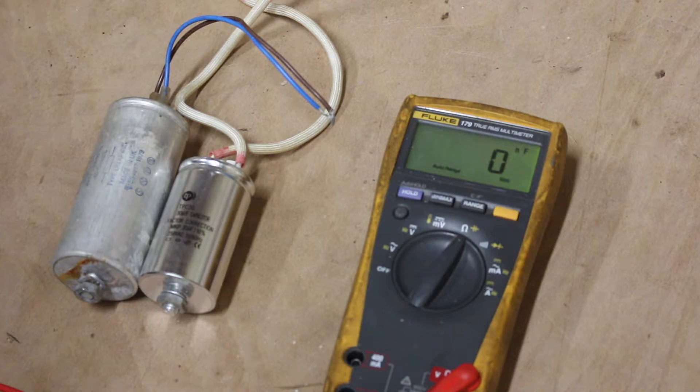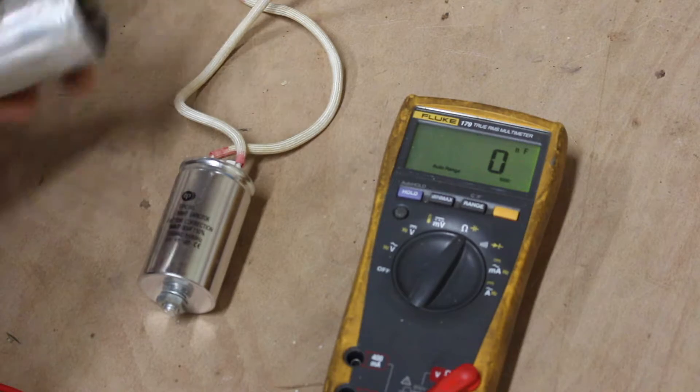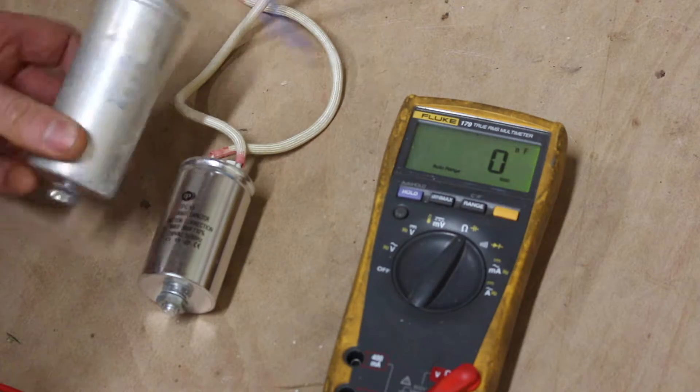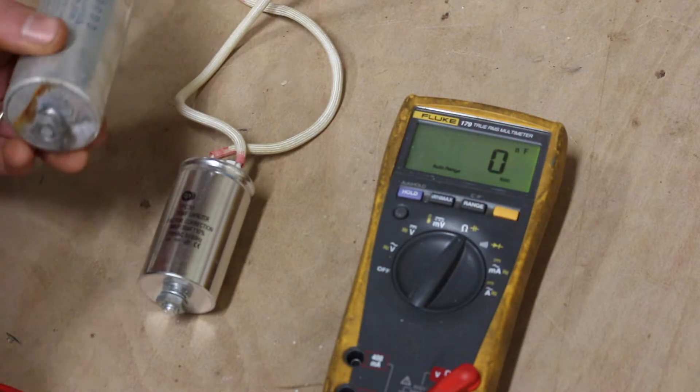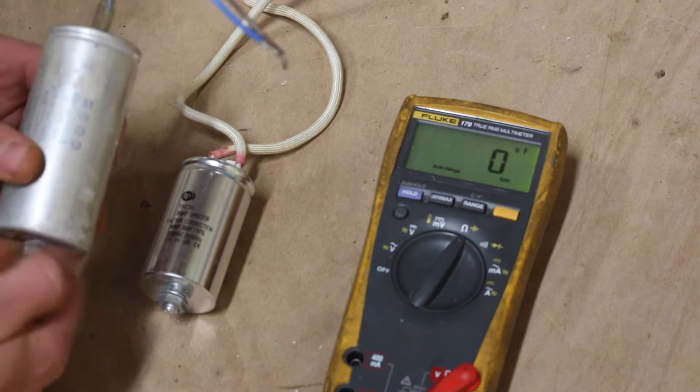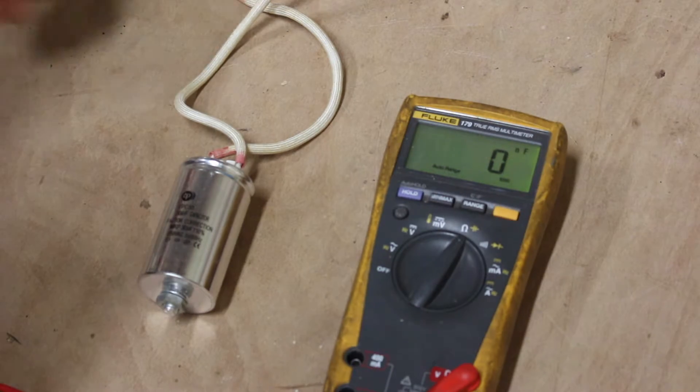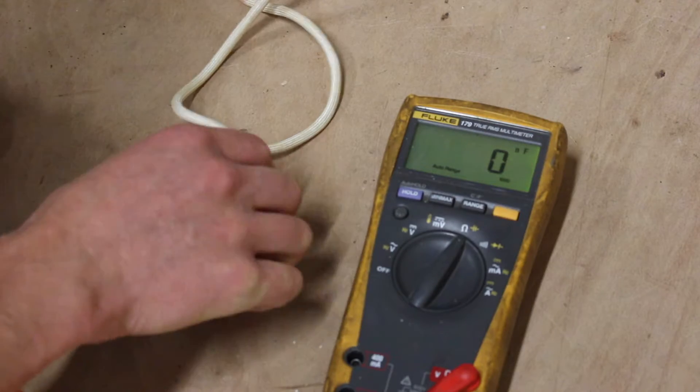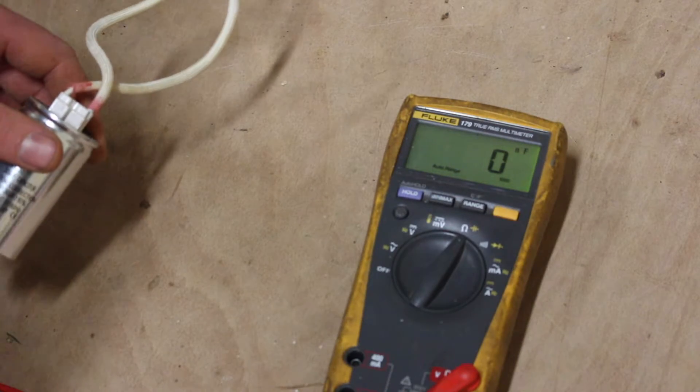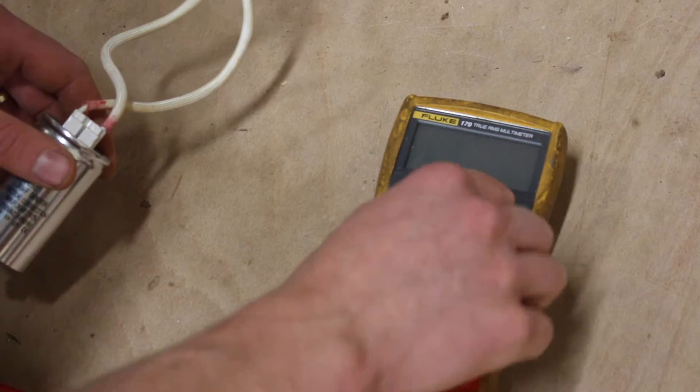Hey folks, just a quick video showing you how to test a capacitor in a lighting circuit. These are both 30 microfarad capacitors out of a 250 watt sodium lamp circuit, and we're going to test using our Fluke multimeter here.